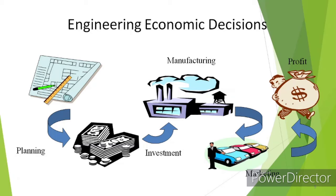With the purchase of any fixed asset or equipment, we need to estimate the profit — or more precisely, the cash flows — that the asset will generate during its service period. In other words, we have to make capital expenditure decisions based on predictions about the future. For example, if you are considering the purchase of a deburring machine to meet anticipated demand for hubs and sleeves used in the production of gear coupling, and you expect the machine to last at least 10 years, this purchase decision involves an implicit 10-year sales forecast, meaning a long waiting period will be required before you know whether the purchase was justified.